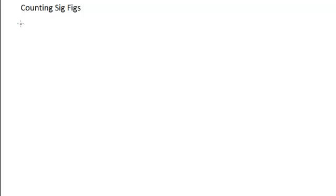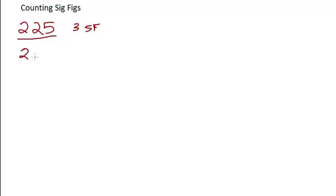The first rule is easy. Any number that has non-zero digits, such as 225, all of those digits are counted as sig figs. There are three sig figs in the number 225. Even if there's a decimal — for example, 2.25 — that number also has three sig figs. SF stands for significant figures, or significant digits, which means the same thing. So all non-zero digits are counted as significant figures.